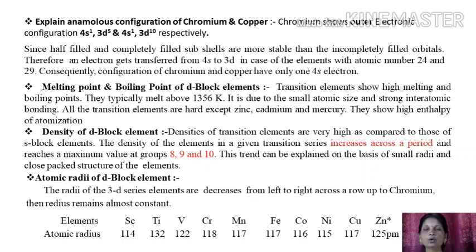Now let us discuss the atomic radii of d-block elements. The radii of 3d series elements decrease from left to right across a row up to chromium, and then the radius remains almost constant. For this purpose, we have taken the values of atomic radii of the 3d series. The element scandium shows atomic radius 114 pm, titanium 132, vanadium 122, chromium shows 118, and then forward the atomic radii remain constant: manganese shows 117, iron shows 117, cobalt shows 116, nickel shows 115, copper shows 117, and zinc shows 125 picometer atomic radii.